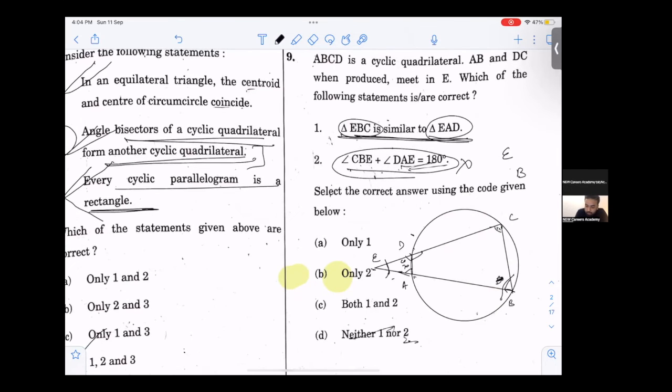If we consider it, suppose it is 50. If it is 50, then it will be 130. If it is 40, then it will be 140. If it is 50, then it will be 40. So here it will be 40.